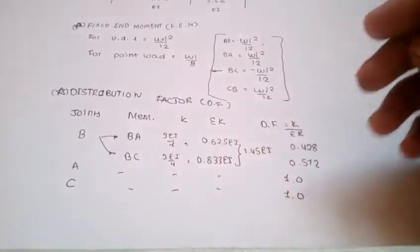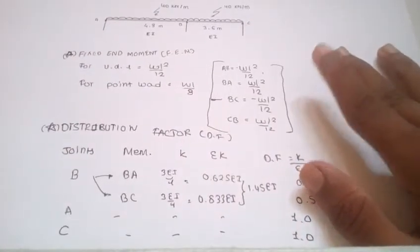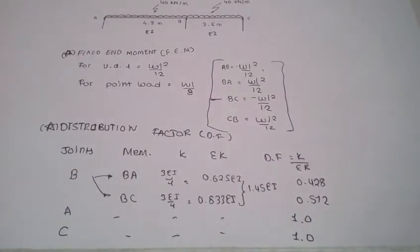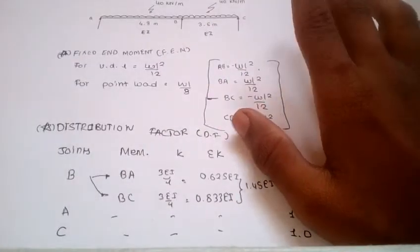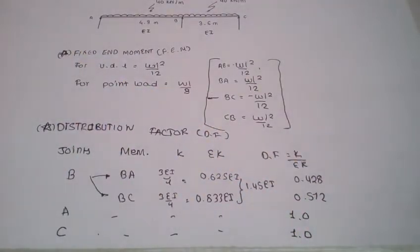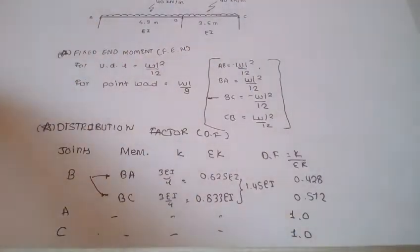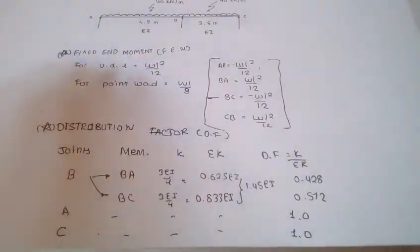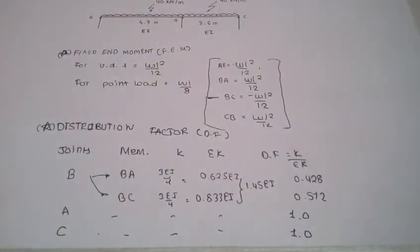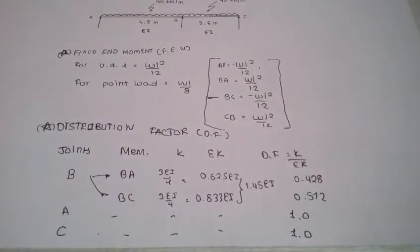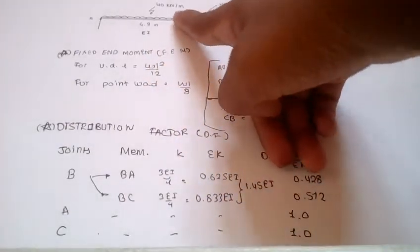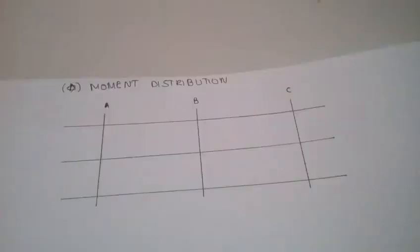BA and BC are classified as follows: BA is equal to 3EI upon L and BC is 3EI upon L, both because of the simply supported far ends. If the far end is fixed, it will be 4EI upon L. I have calculated 3EI by taking EI as a constant. You have to take EI into consideration in the example. So 3EI upon L, where L is the length and W is the load coming from the upward direction.